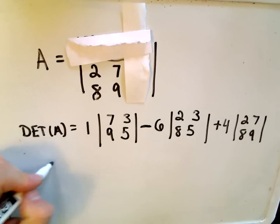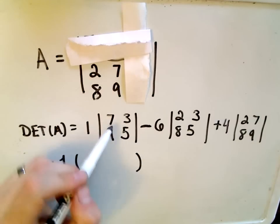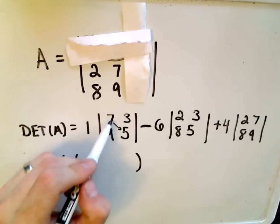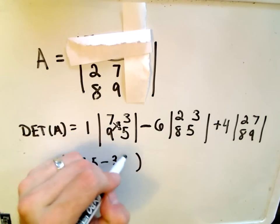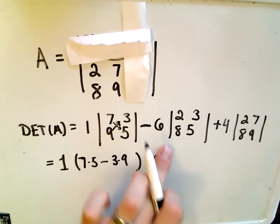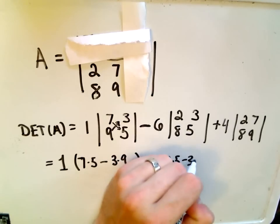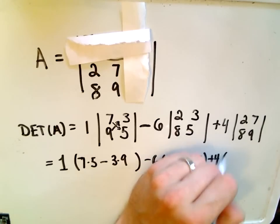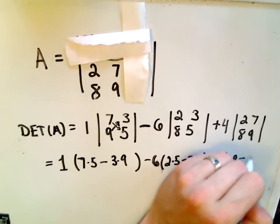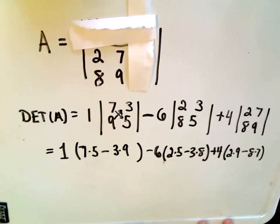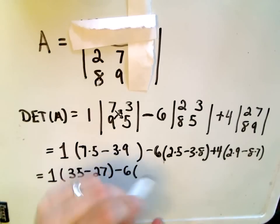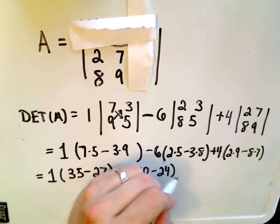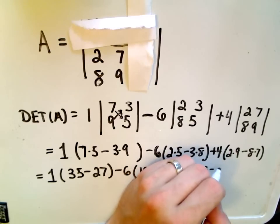That's the setup. Now we compute the individual determinants. To compute a 2x2 determinant, we multiply the top left and bottom right - 7 times 5 - minus the other diagonal, 3 times 9. Then minus 6 times (2 times 5 minus 3 times 8), and then plus 4 times (2 times 9 minus 8 times 7).